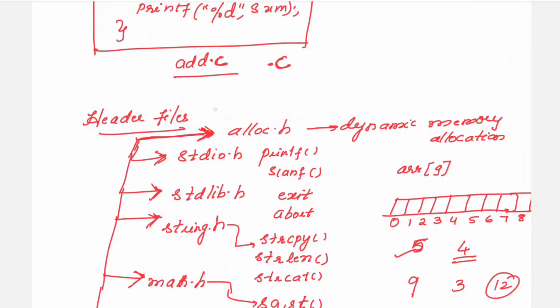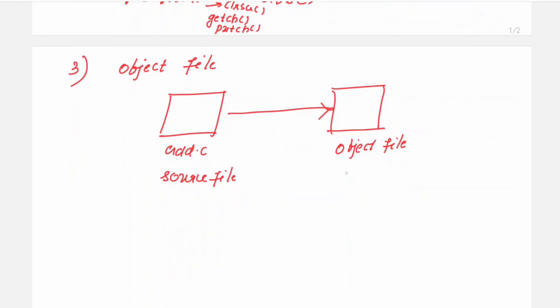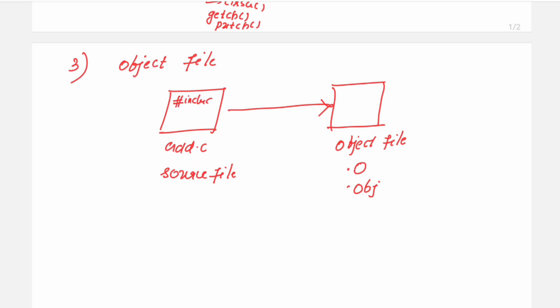One more point I wanted to include here. Header files will have extension .h. Object file will have extension .o or .obj. So here is your source program, whatever you have written. So this program will get converted into object file, means into a binary language, in a language which the machine understands. To get this particular file executed, the linker comes into picture.